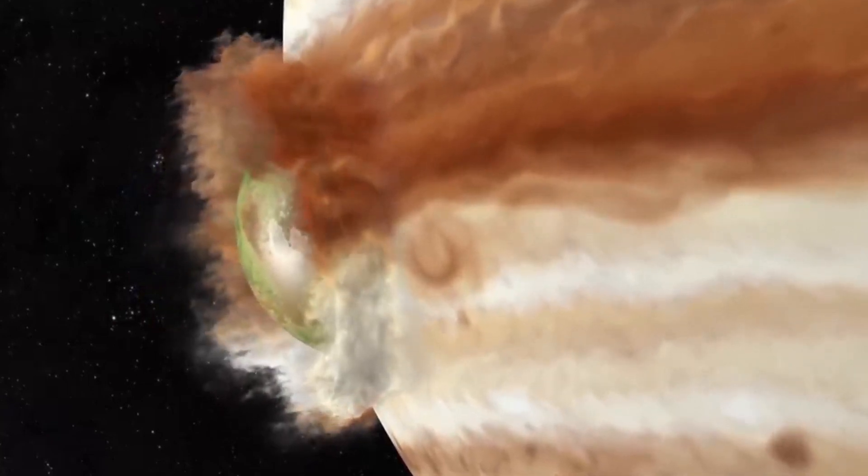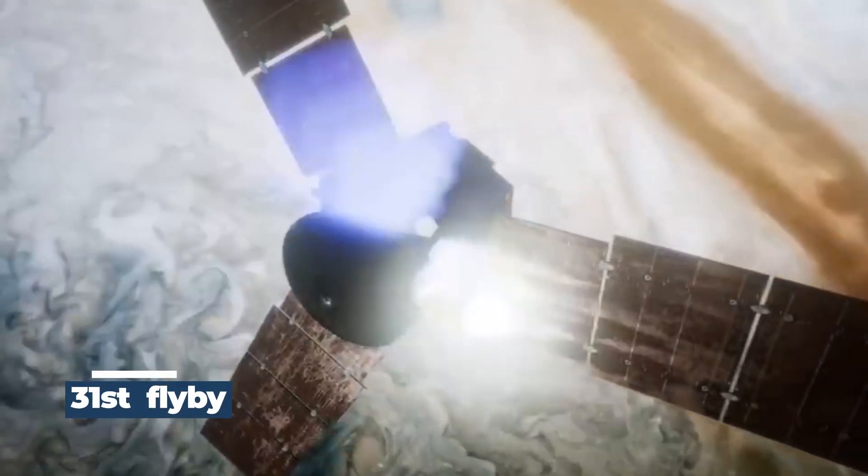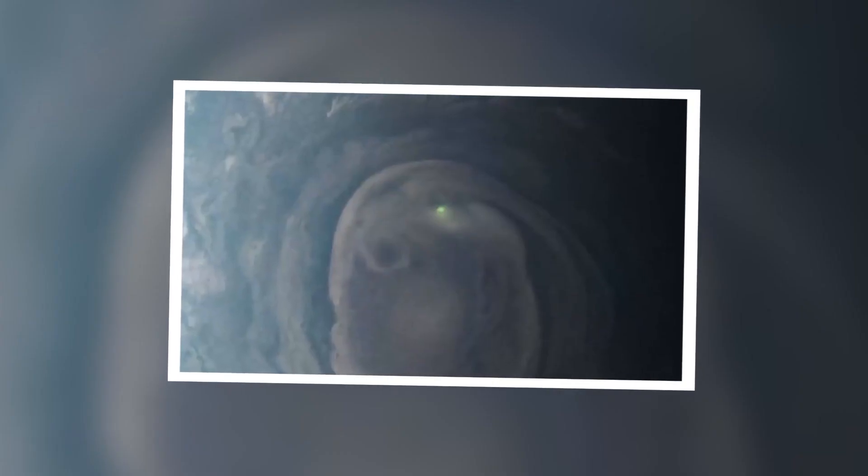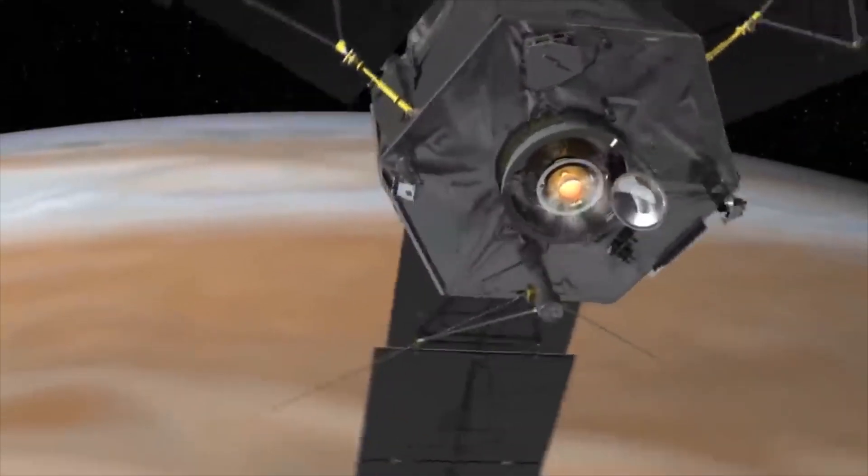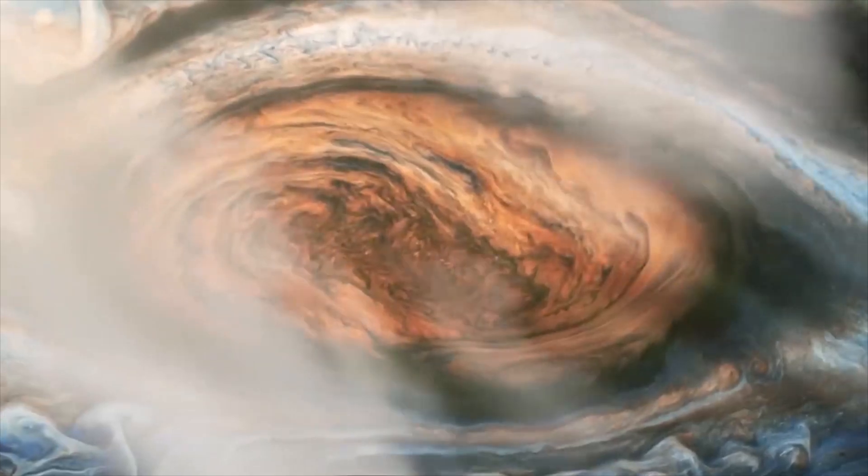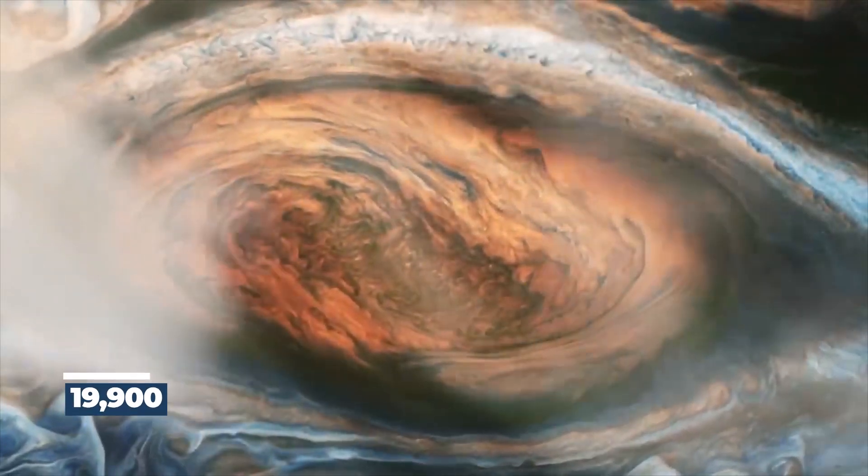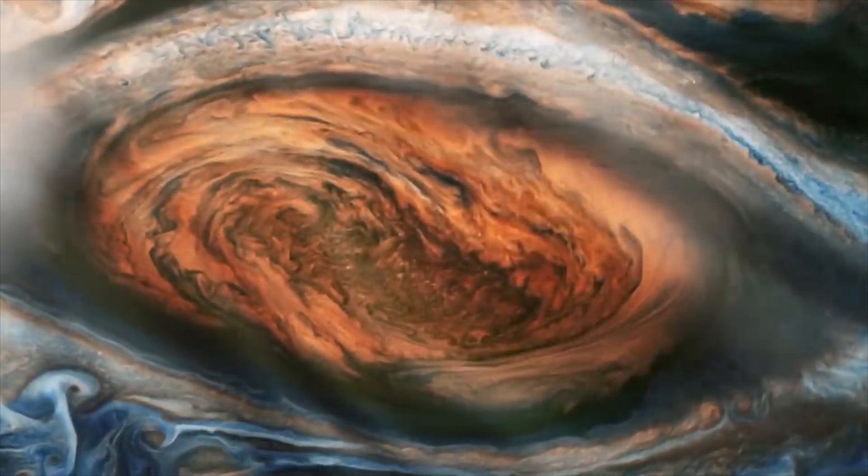During its 31st close flyby of Jupiter, Juno also photographed a green flash on the planet. At the time, Juno was approaching Jupiter at a latitude of about 78 degrees and was roughly 19,900 miles above the planet's cloud tops.